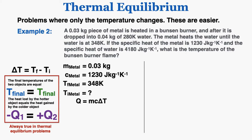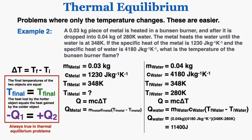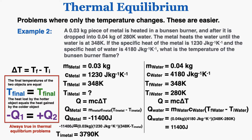I know Q = mcΔT. For the water, I have all the variables I need, so plugging in gives the heat added to the water as 11,400 joules. Because this is a thermal equilibrium problem, the heat added to the water equals the heat lost from the metal, so Q_metal is also 11,400 joules, just negative. Plugging that into the metal's equation and isolating the initial temperature using algebra gives an initial temperature of 3,790 Kelvin — the temperature of the Bunsen burner flame.